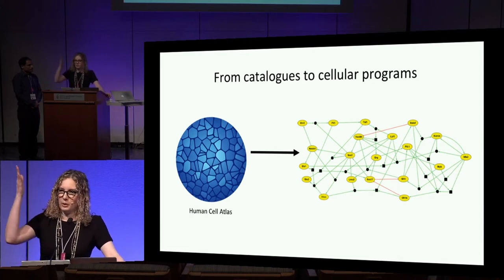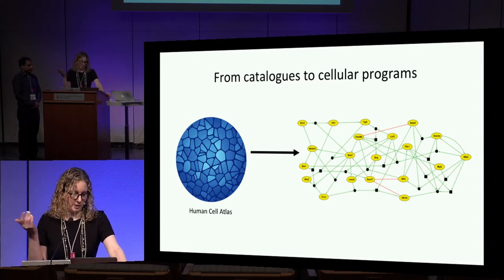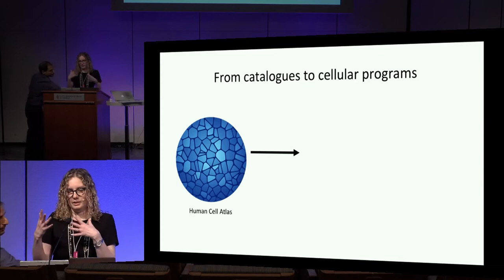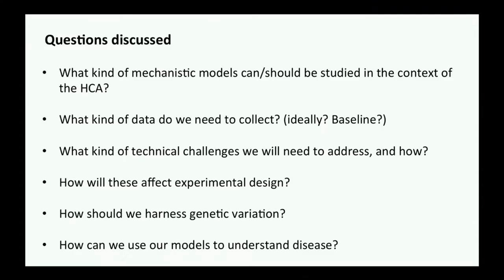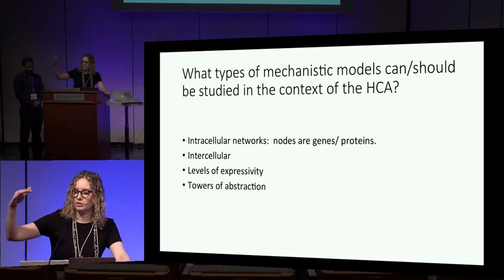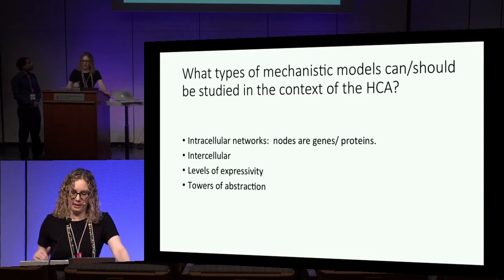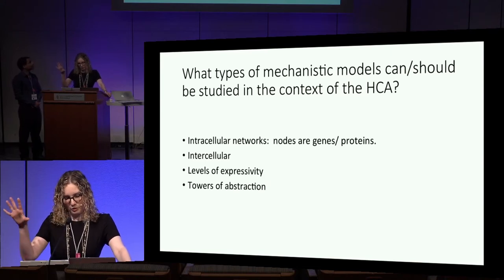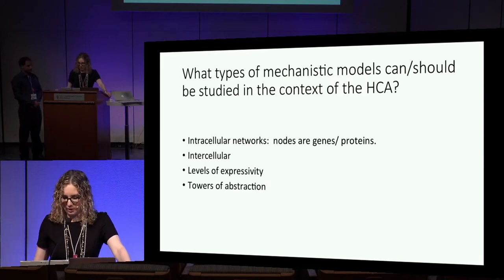In those networks, we also have edges. The edges can represent the type of regulation between different entities, but sometimes we need more details than that. We're really talking about the operational rules that govern the behavior of these networks, which are a signature of some cellular phenotype — and how we go from low-level interactions, whether activation or inhibition, to a particular cell behavior, and how network states map to cellular behaviors.